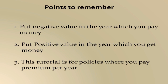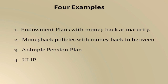Remember this tutorial assumes you are paying premium each year. There are four examples we will cover. First, a plain endowment plan where you get money only at maturity. Second, a money back policy where you receive money periodically. Third, a pension plan where you pay in the beginning and receive pension for many years. Finally, a ULIP example to show how to calculate returns from unit-linked plans.